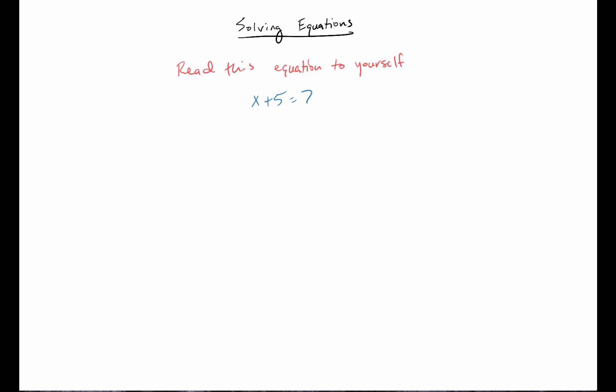Now go ahead and read this to yourself, and this is kind of an exercise, so if you want to pause it for a sec that's great. And you probably would think x plus five equals seven, and that's great, that's one way we could describe it. However, we could also say a variable is representing a number plus five is equal to seven.